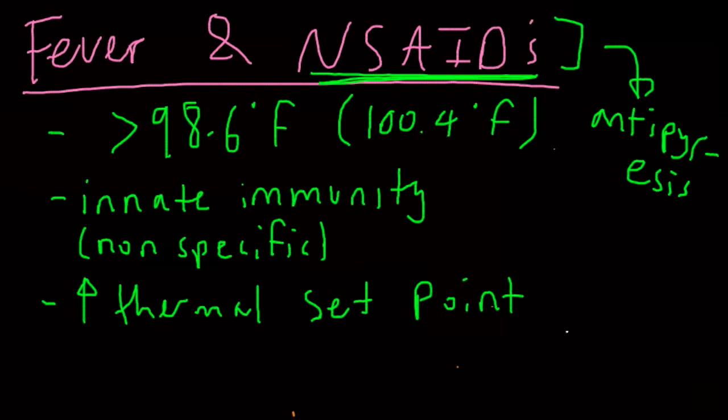The regular body temperature on average is about 98.6 degrees Fahrenheit. Technically, a temperature greater than 98.6 degrees Fahrenheit refers to fever. But from a clinical standpoint, and what you'll see in a lot of your textbooks, is that 100.4 degrees Fahrenheit is the clinically relevant definition of fever.